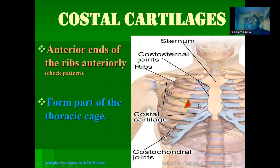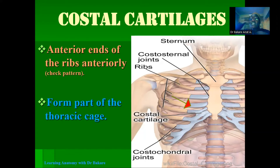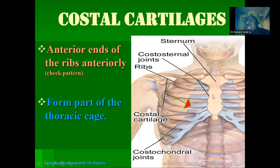The costal cartilages form part of the thoracic cage. If you look at the structural components of the thoracic cage, you see that it is made up of the sternum anteriorly, the thoracic vertebrae posteriorly, and the ribs spanning from the thoracic vertebrae posteriorly to the sternum anteriorly. The ribs are not connected directly to the sternum, but are connected through the costal cartilages, so they also form part of the structural components of the thoracic cage.